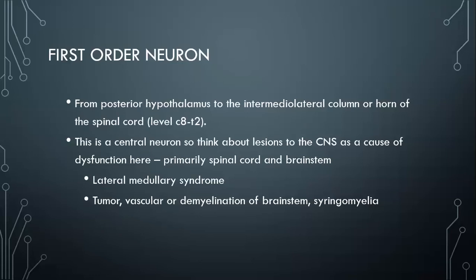Starting with first-order neurons: the first-order neuron goes from the posterior hypothalamus to the sympathetic intermediolateral column (IML) of the spinal cord, exiting around T1 to become the second-order neuron. Since this travels through the hypothalamus, brainstem, and spinal cord, it's a central neuron. CNS lesions — including vascular events like lateral medullary syndrome, tumor, or demyelinating disease — can cause dysfunction here. For brainstem lesions, ask about the 'Ds': dysarthria, dysphagia, diplopia, and Horner syndrome.